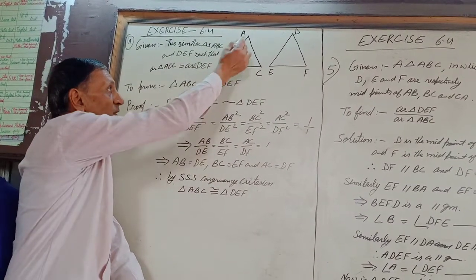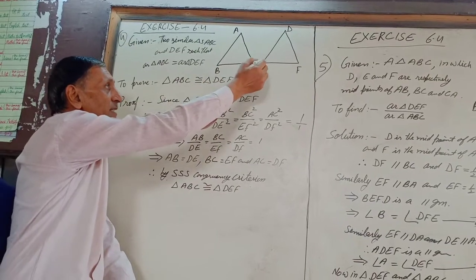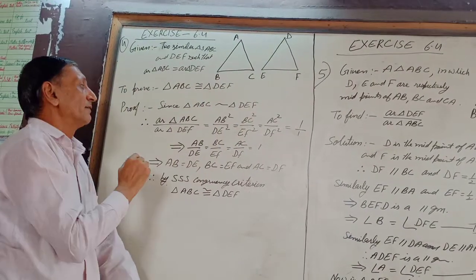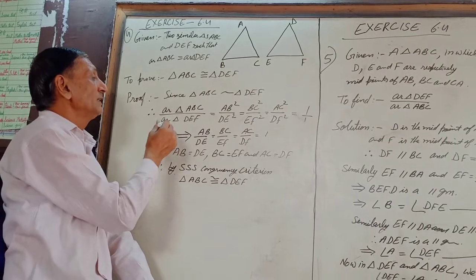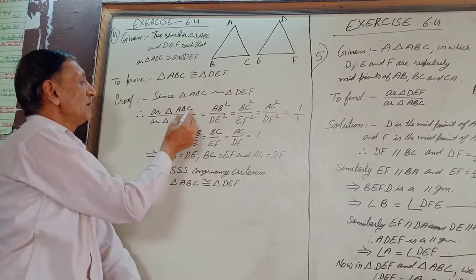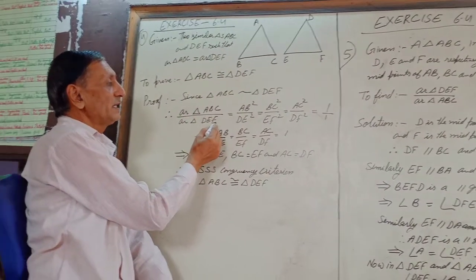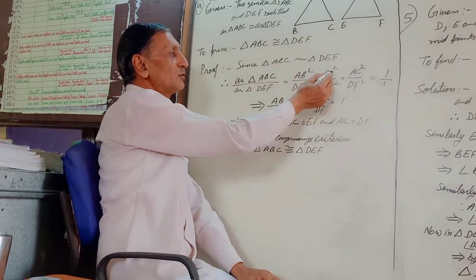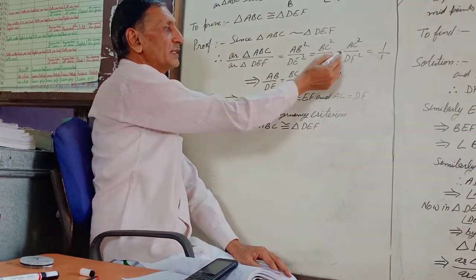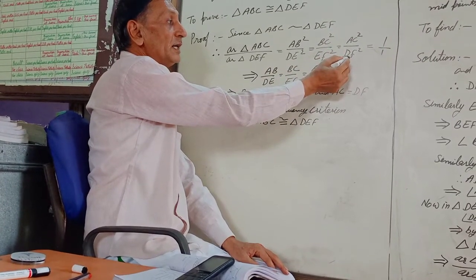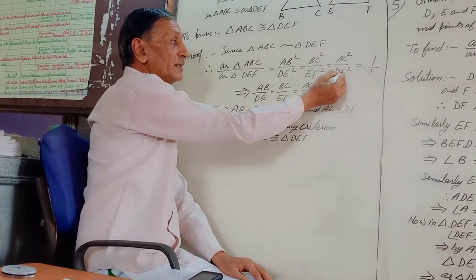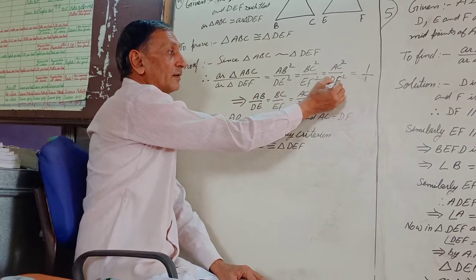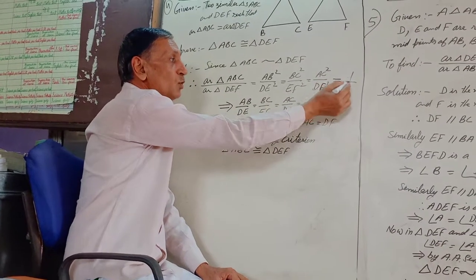Since these two triangles, triangle ABC is similar to triangle DEF, therefore it can be written that area of triangle ABC upon area of triangle DEF is equal to AB square upon DE square is equal to BC square upon EF square is equal to AC square upon DF square. And this is equal to 1.